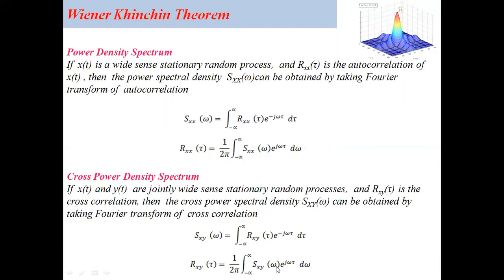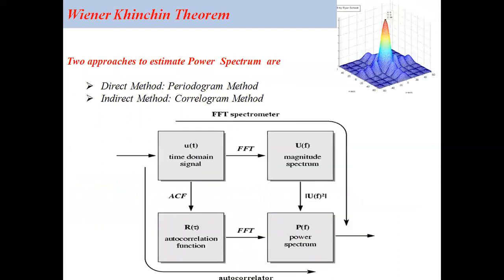So this gives a good insight that for better understanding of the Wiener-Kinchin theorem, one should have knowledge of what is meant by Fourier transform, what is meant by cross correlation, and what is meant by auto correlation.